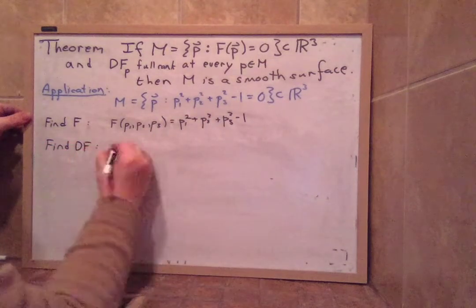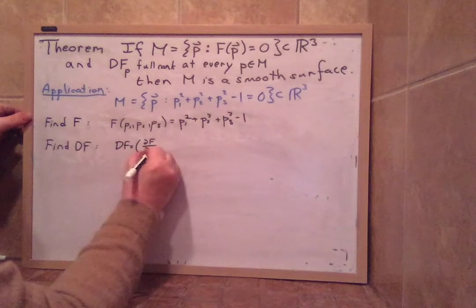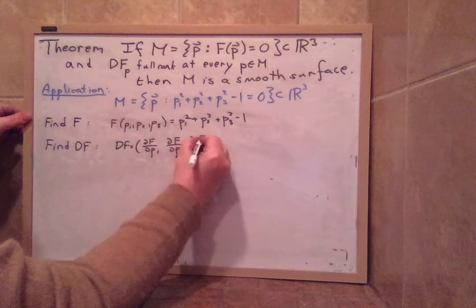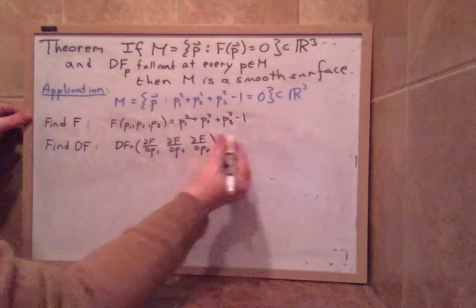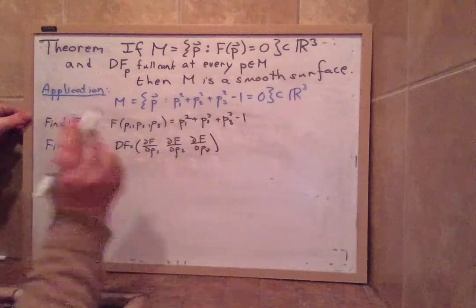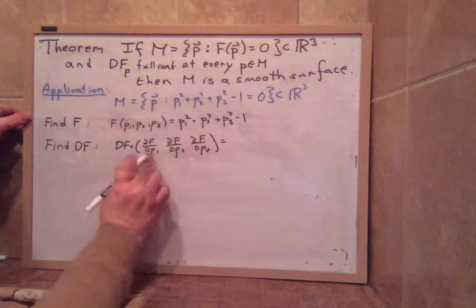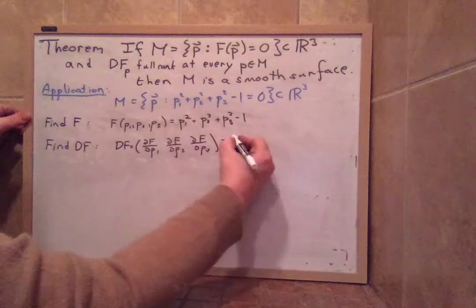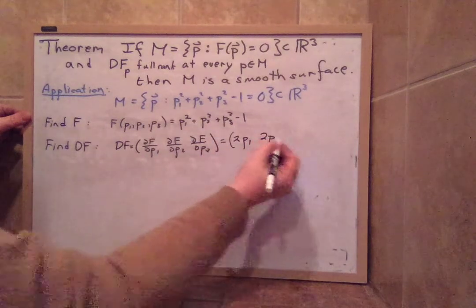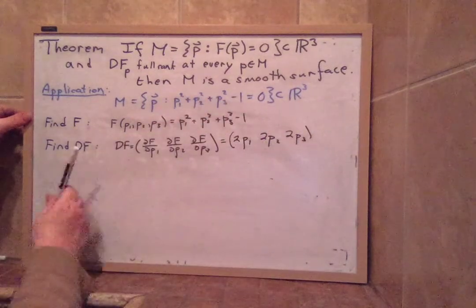So when we find df, we take df is df dp1, df dp2, df dp3 because this f only has one output variable. It's just zero. It's just one single real variable. So f has only one answer here. So it has only one row. So now we take with respect to p1 of this and that is 2p1. We take with respect to p2 here and we get 2p2. And now we have to check.